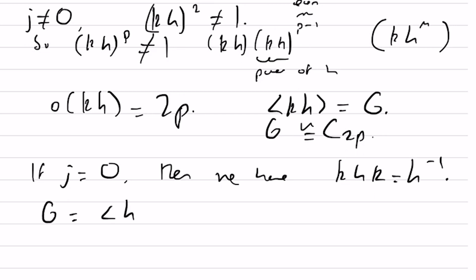So G is the subgroup generated by h and k such that h to the power of p is the identity, which is also k squared, and khk is h inverse. But this is just the definition of the dihedral group of order 2p.